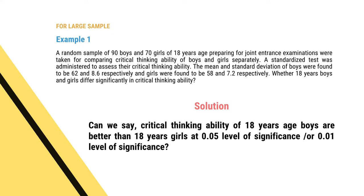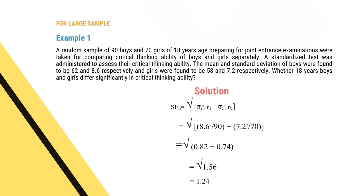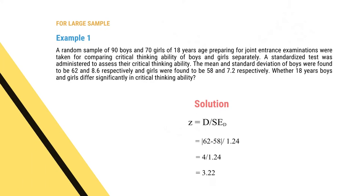We will test at 0.05 level and then at 0.01 level of significance. The standard error of difference equals the square root of (σ1² / N1 + σ2² / N2). Applying the values of standard deviation and sample sizes, the standard error of difference comes to 1.24. Since the sample size is large, we calculate Z = D / SED. Substituting the values of the two sample means gives Z = 3.22.